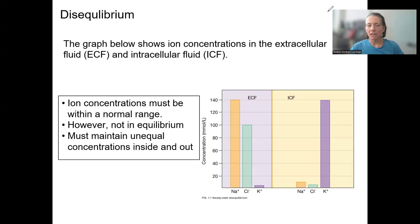The graph below is showing ion concentrations inside and outside the cell, ECF and ICF. These are normal concentrations that must be kept in disequilibrium, unequal concentrations. For example, high sodium and chloride outside the cell and high potassium inside the cell.